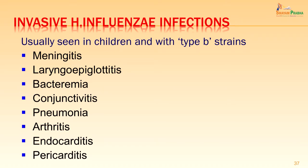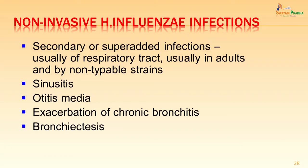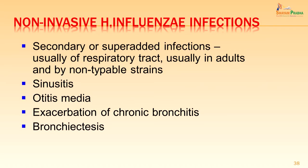Apart from meningitis, H. influenzae can cause laryngoepiglottitis (croup), bacteremia, conjunctivitis, pneumonia, arthritis, endocarditis and pericarditis as invasive infections. Non-invasive infections are generally secondary or super-added respiratory tract infections in adults caused by non-capsulated strains. The capsulated strains usually present with invasive infections and the non-capsulated strains with non-invasive infections. Since antisera is available to the capsulated strain only, the non-capsulated strains are often referred to as non-typeable strains. As a secondary infection it can cause sinusitis, otitis media, and exacerbation of chronic bronchitis or bronchiectasis.